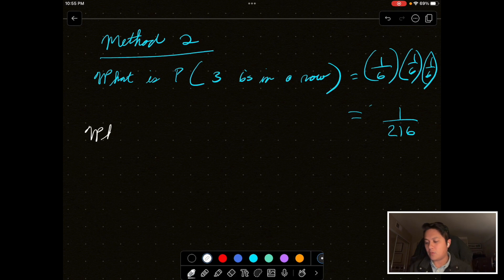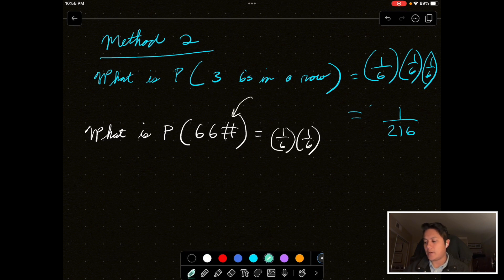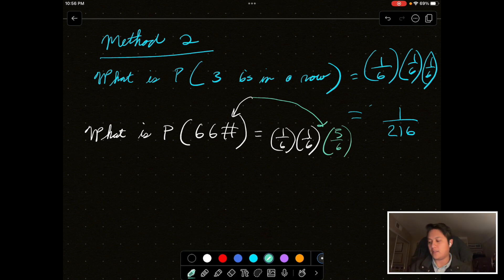So, how about what is the probability you get sixes on your first two rolls, and then some other number besides six on your third roll? Well, that is one out of six times one out of six. Now, this number right here, you actually have a five out of six chance of getting a non-six value, because there are five other numbers besides six here.